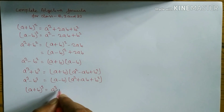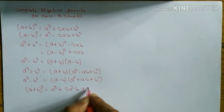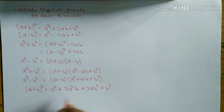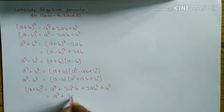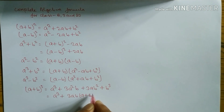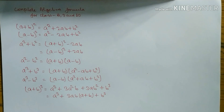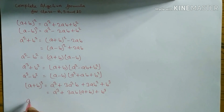The next formula is (a + b)³. Expanding it gives a³ + 3a²b + 3ab² + b³. If we take 3ab common, the remaining terms give (a + b). So the formula of (a + b)³ is a³ + 3ab(a + b) + b³.